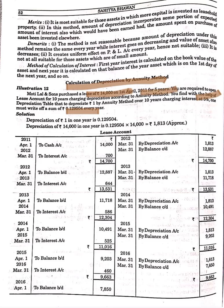We have to work this out for 5 years. In the annuity method, a decimal digit will be given from the depreciation table. To calculate depreciation, we multiply the amount of the asset by that decimal digit. Here the asset amount is 14,000 and the decimal digit is 0.129504. When we multiply, the depreciation comes to approximately 1,813. This depreciation will be fixed every year.